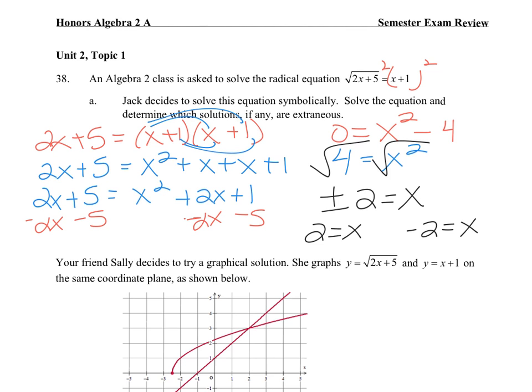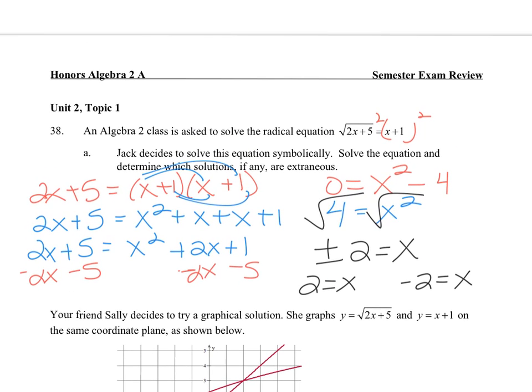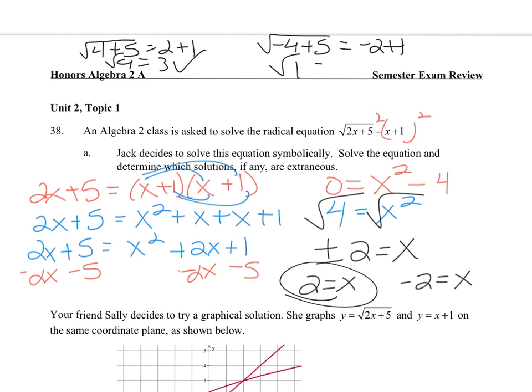So let's check our answers. Plugging in positive 2, that's the square root of 9 equals 3. That's right. That's an answer. Let's try negative 2, and that's saying the square root of 1 equals negative 1. That's extraneous.